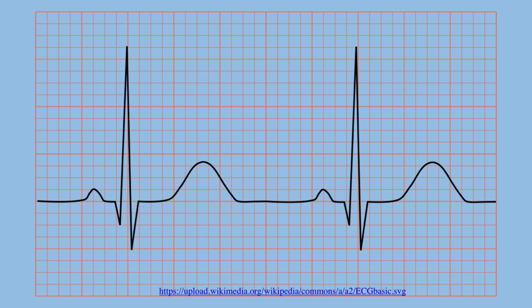First of all, this is a normal strip showing the P wave, the QRS complex, the normal ST segment coming exactly on the isoelectric line, and then the T wave, and then the next complex. Whenever you are looking for any arrhythmias you have to check the P wave's presence. If the P wave is preceding the QRS complex and all the QRS complexes are succeeding the P waves, then you are dealing with sinus rhythm — this is very important to note.